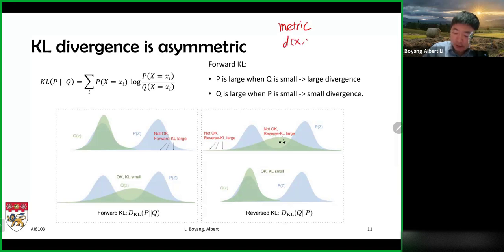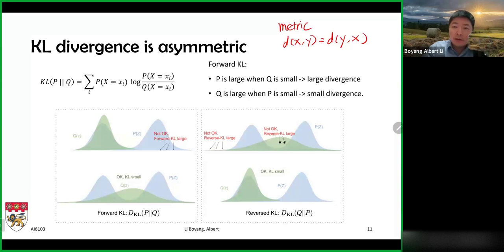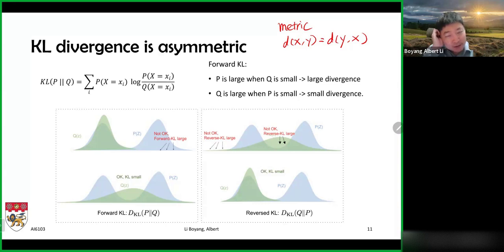For any distance measure — sometimes referred to as a metric in mathematics — for a valid distance measure, we would expect it to be symmetric: the distance between x and y should intuitively equal the distance between y and x. Like going from home to office being three kilometers should be the same as going from office to home. But a funny thing about KL divergence is that it is not always symmetric — it's actually asymmetric. From the mathematical equation, Q and P don't take equal status: one appears on the denominator and one appears on the numerator and outside the logarithm.